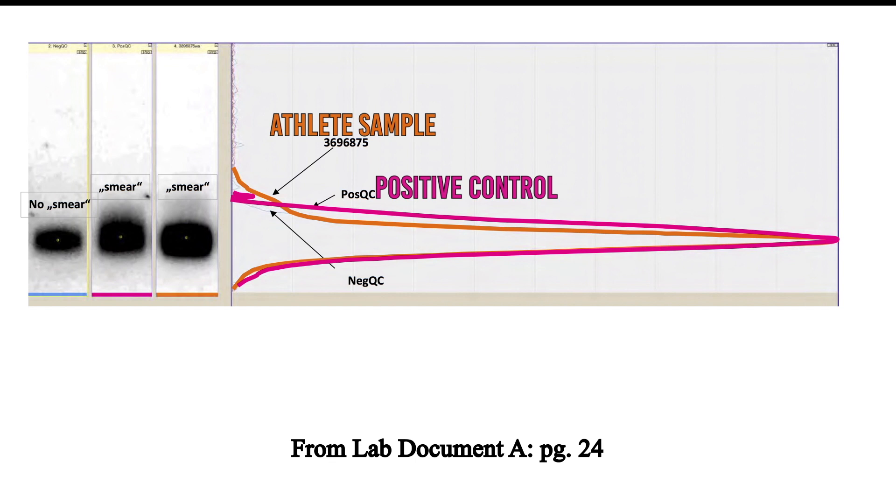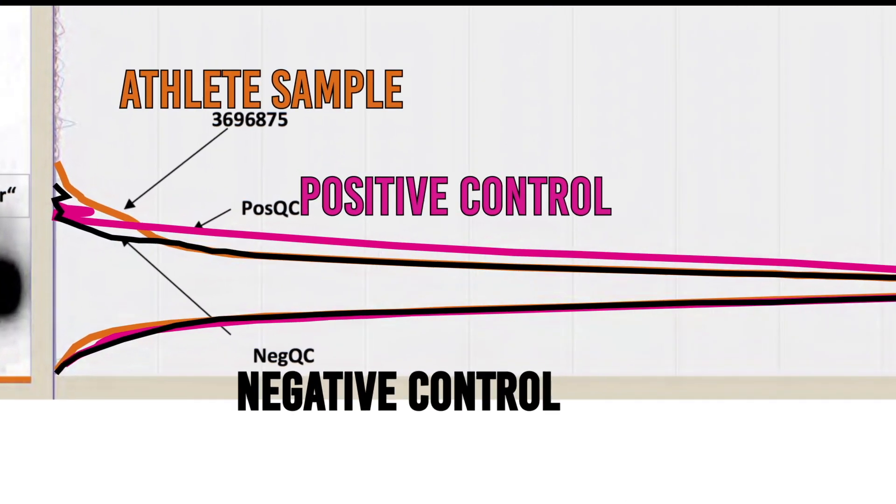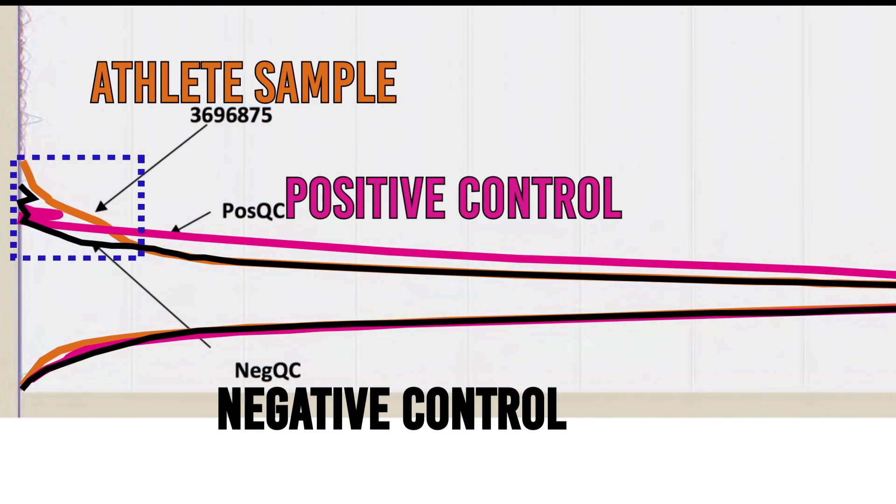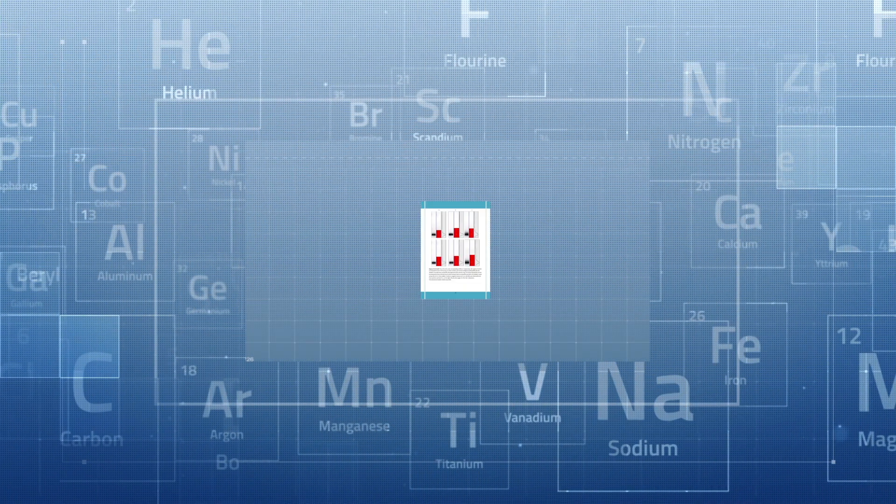Look, however, at the athlete sample when compared to the negative control. The lines are almost identical except for this small shoulder. So, while something is there, because it does not match the positive control, the results are inconclusive.